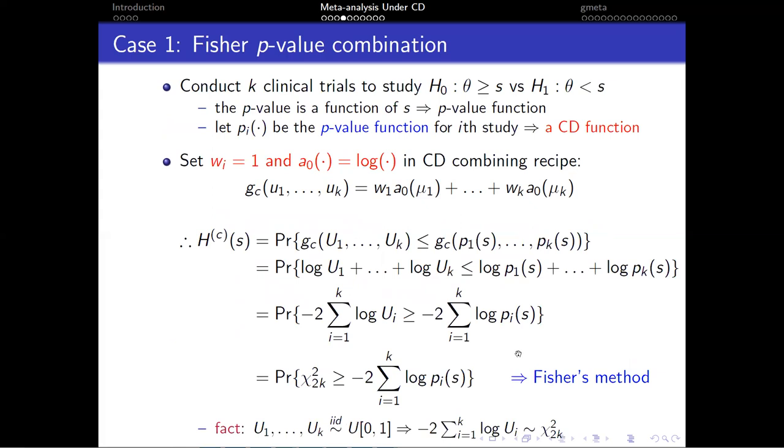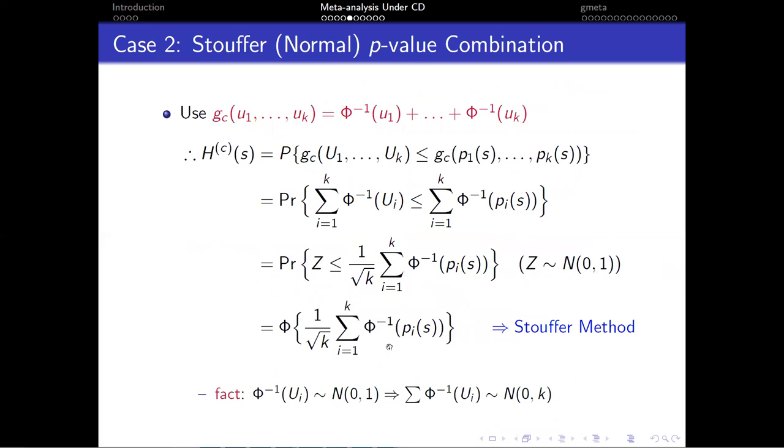We will discuss some choices of weights and monotonic function A used in GMeta package. In the first case, we use p-value for each study and unit weights and log functions. Then we can get the combined p-values for case studies right here. And this is exactly the result from Fisher's method. And when we use inverse of cumulative distribution function for normal random variables, when we combine those p-values, the result right here is actually the Stouffer's method.